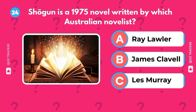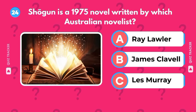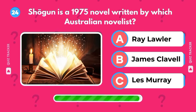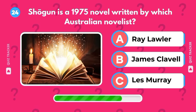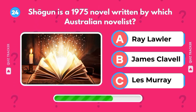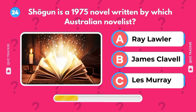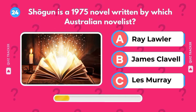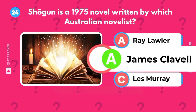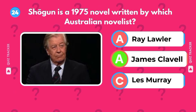Shogun is a 1975 novel written by which Australian novelist? It's James Clavell.